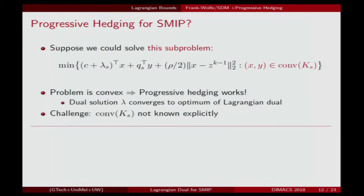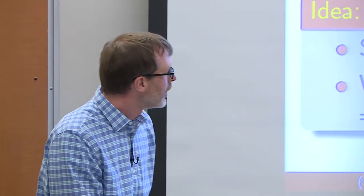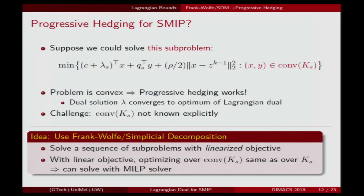Unfortunately, this is difficult to do with off-the-shelf software directly, because you don't have an explicit representation of the convex hull. Reading a review article about Frank-Wolf methods, it clicked to me: why not use one of these Frank-Wolf-type simple decomposition methods, which solve a sequence of problems with a linearized objective to optimize over a convex set. The key point is that with a linear objective, optimizing over a convex hull is the same as optimizing over the set itself, and you can use off-the-shelf software for those subproblems.